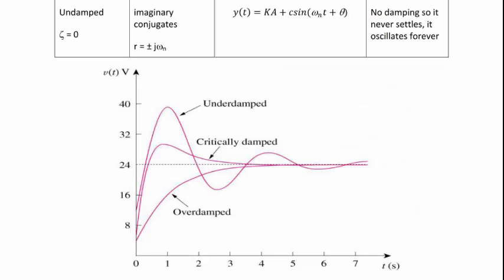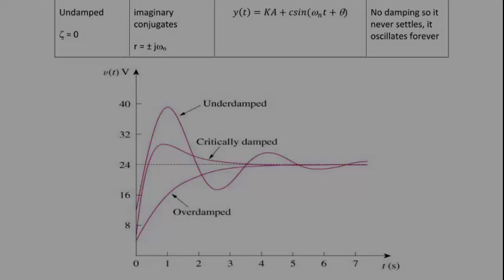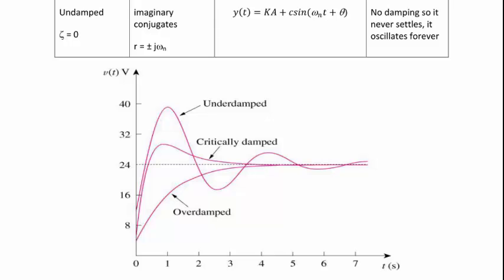The last type of response is undamped. Zeta equals zero means there is no damping, so the output will oscillate forever. It has imaginary conjugate roots r equals plus or minus j omega_n, and the form is y of t equals ka plus c sine of omega_n t plus theta. A figure shows a graph of the output for overdamped, critically damped, and underdamped. Overdamped has no overshoot and no oscillations; critically damped has a little overshoot but settles quickly; underdamped has more oscillations and takes the longest to settle.